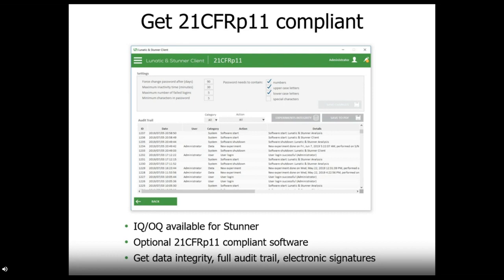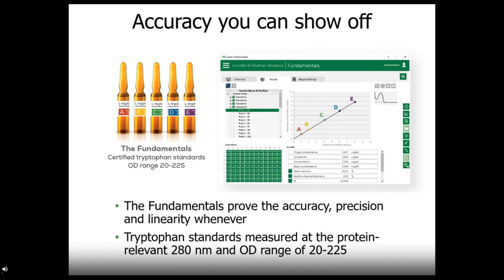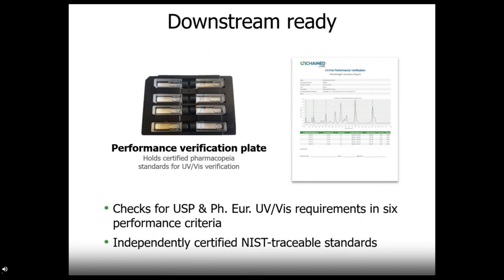We offer IQOQ services and Stunner software is 21 CFR Part 11 compliant with full audit trail and electronic signature capabilities to help you achieve full integrity on your experiments and reports. And Stunner has shocking accuracy and wants to prove it. Using the fundamental tryptophan standards, the accuracy, precision, and linearity of the instrument can be proven at any time. At the protein-relevant 280 nanometer wavelength, OD ranges from 20 to 225. Be confident about every sample with data that leaves no room for doubt. And the features don't stop there. If you would like to move Stunner downstream, we also have a performance certification. These tests with certified cuvettes meet the United States pharmacopoeia and European pharmacopoeia guidelines for UVV spectrometers. The tests and all necessary calculations are handled automatically by the software.